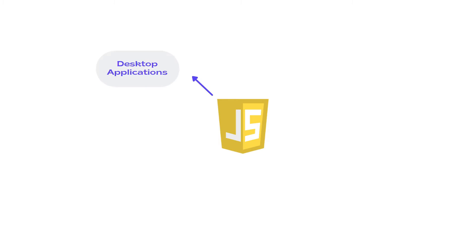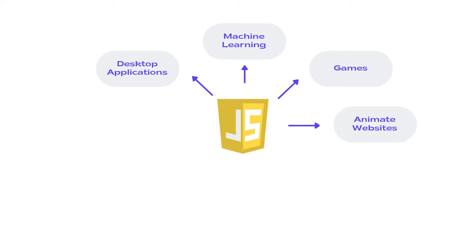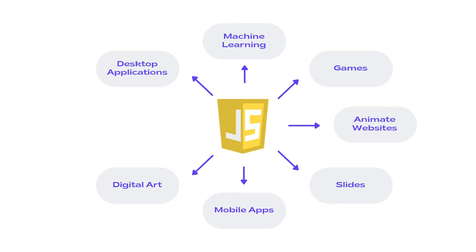Because of these features and many more, JavaScript has been used in many industries. To list some of them: desktop application development, machine learning, game development, website animations, slide-based websites, mobile apps, digital art, robots, and many more use cases. These are just a handful because JavaScript is a general-purpose language. I will list down some of the frameworks available for each category.